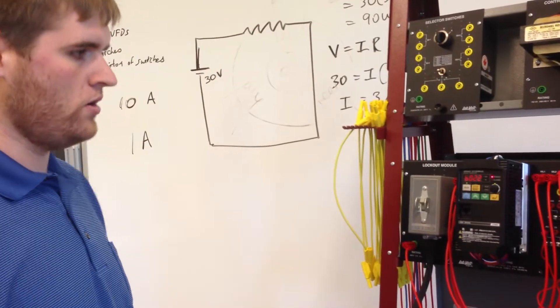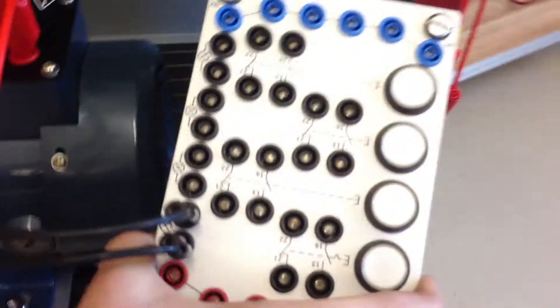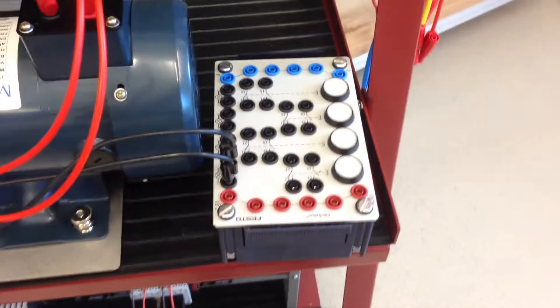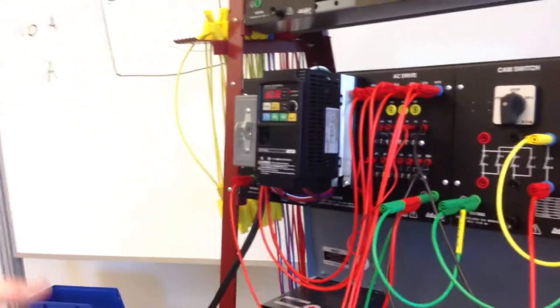So we also have hooked up here a light which this is wired to our VFD here and what that light is going to indicate is when we hit a certain level.